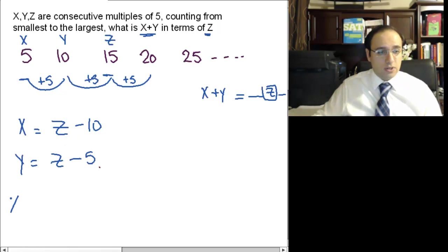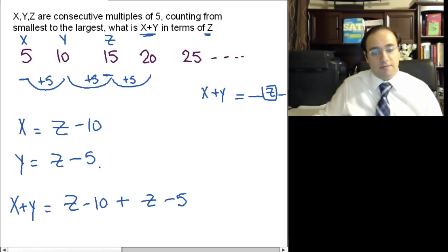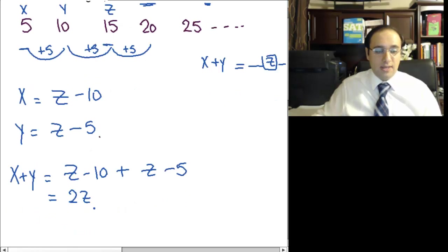Now, add these two equations. On the left-hand side, you get X plus Y. On the right-hand side, you get Z minus 10 plus Z minus 5. Z plus Z equals 2Z. Minus 10, minus 5, or negative 10 minus 5 is minus 15. That means X plus Y equals 2Z minus 15.